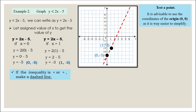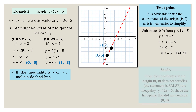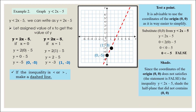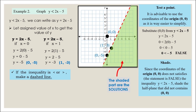Test a point. Use the origin (0, 0). Substitute into the inequality y less than 2x minus 5. We get 0 less than negative 5. Is 0 less than negative 5? No, the statement is false. Then shade: since the origin (0, 0) does not satisfy the inequality y less than 2x minus 5, shade the half plane that does not contain (0, 0). The shaded part represents the solutions.